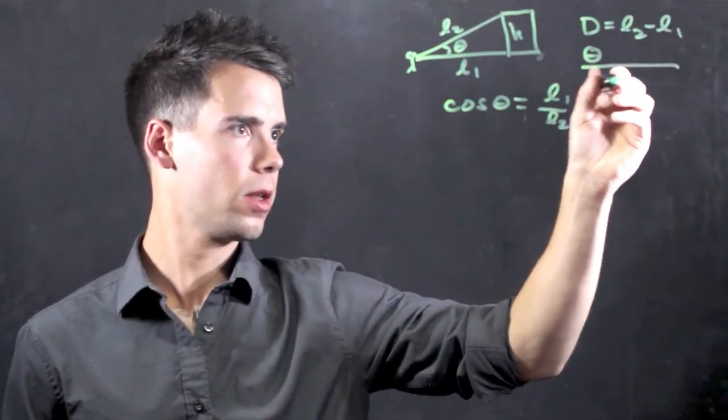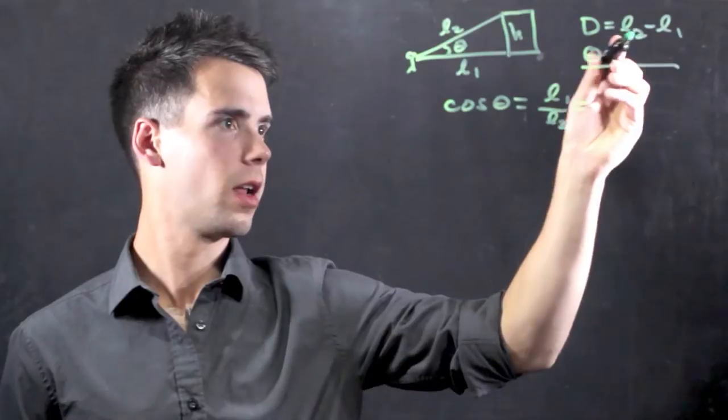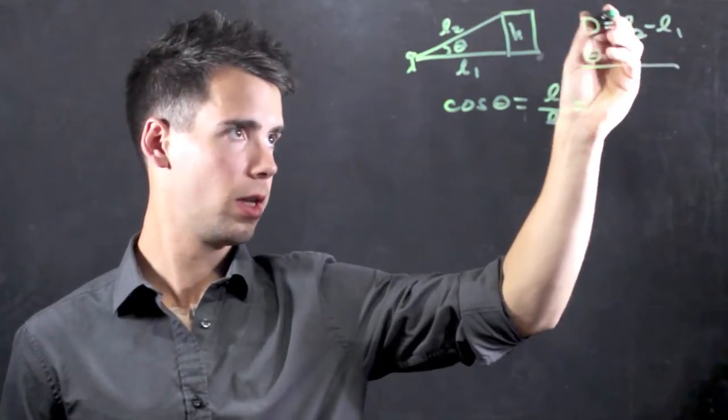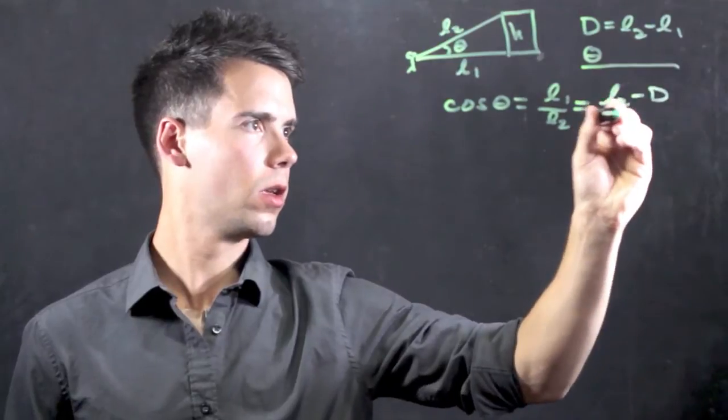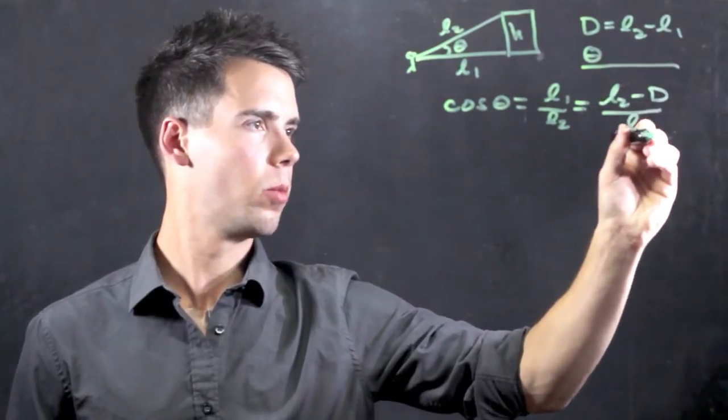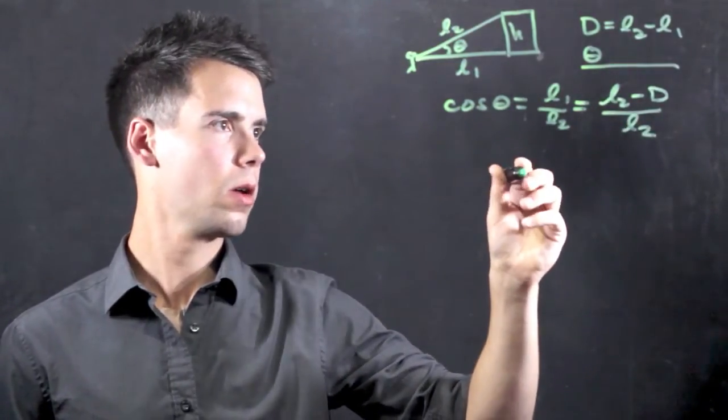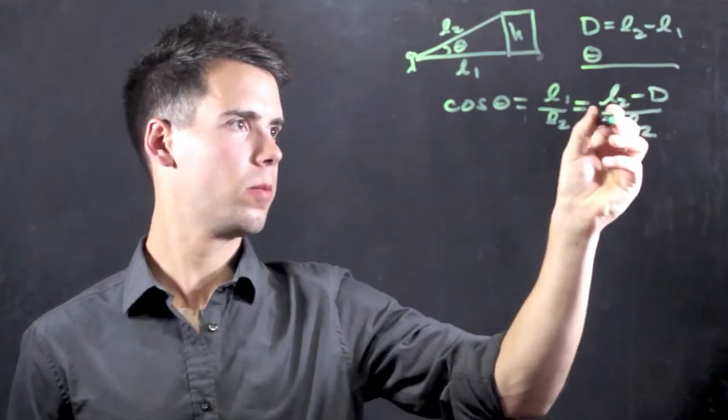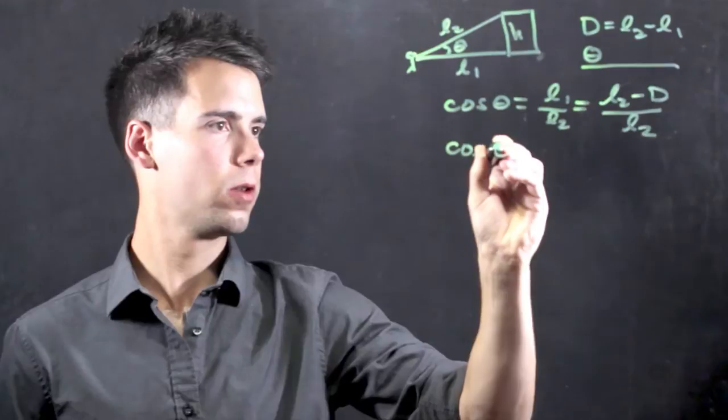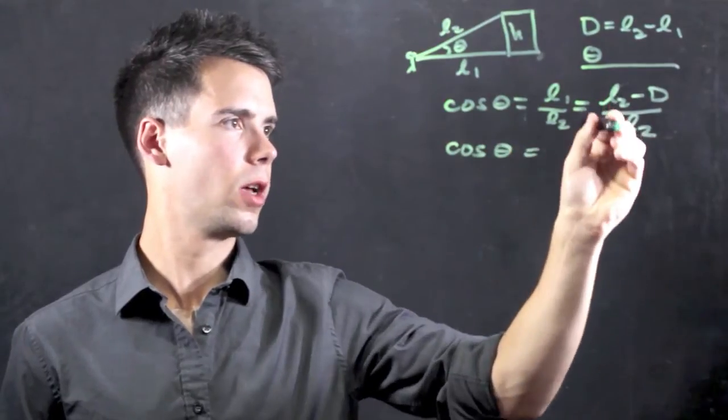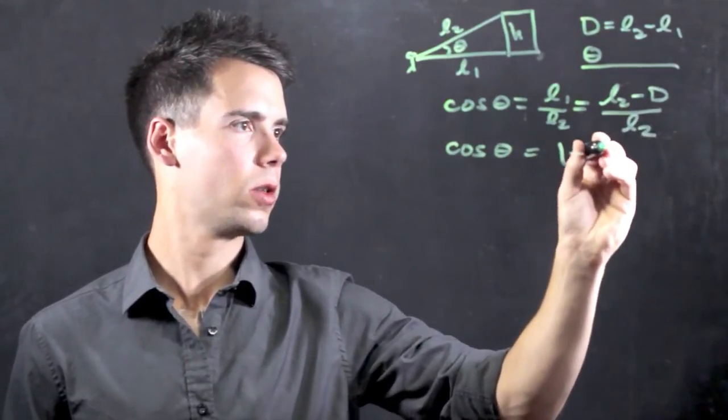So if we write that right here, we find that L1 is equal to L2 minus d, and this is divided by L2. And now we can divide both of these by L2, and we find that cosine of theta is simply equal to L2 over L2, which is 1 minus d over L2.